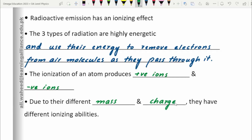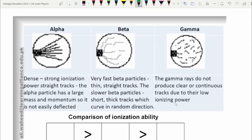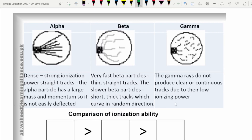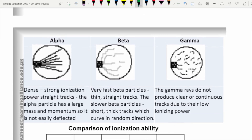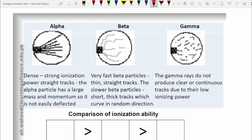Alpha particles, beta particles, and gamma particles — because of their different mass and different charge — have different ionizing abilities. Making a comparison, the maximum ionizing effect or ability to ionize is for the alpha particles, and they have it greater than the beta particles, who in turn have it greater than the gamma particles.